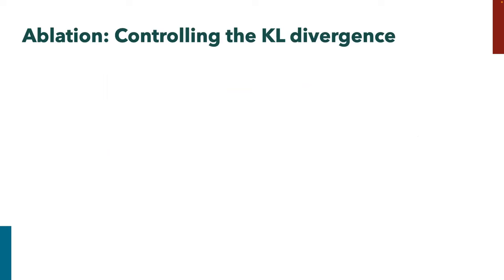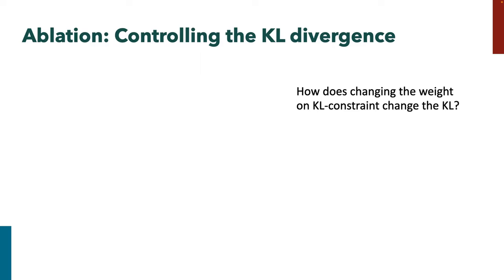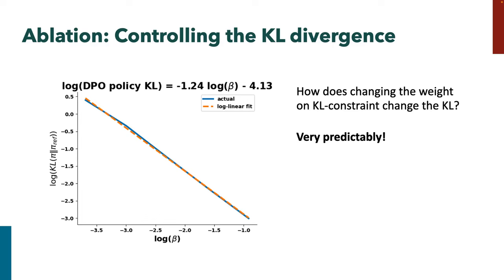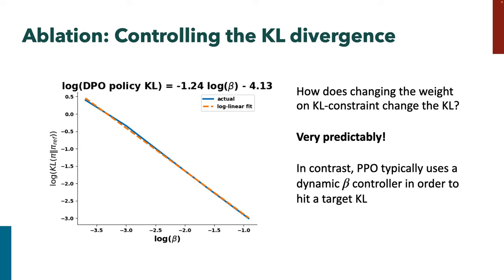One other thing: how does changing beta in our objective actually change the KL we end up with? Fortunately it changes it very predictably — plotting log(beta) against log(KL) across training runs shows a very clean relationship. This is worth mentioning because in PPO, beta doesn't fully determine the KL you end up with — you can run PPO twice with the same beta and get very different KL values. So in practice people use a dynamic beta controller that measures KL during training and adjusts beta on the fly, which is just annoying. With DPO you don't have to do that.